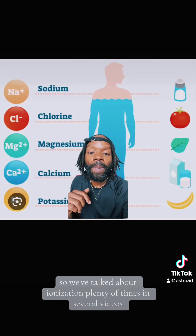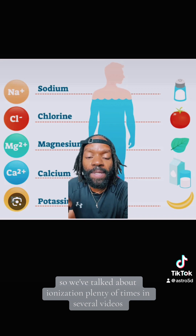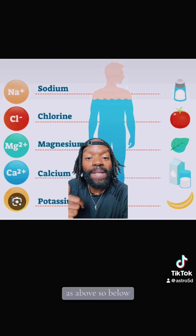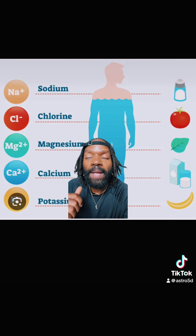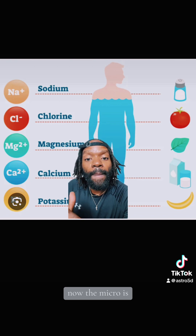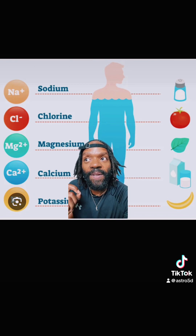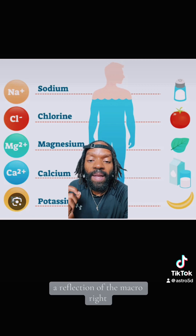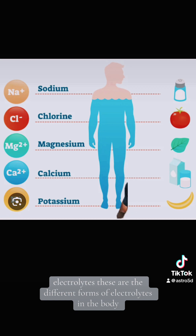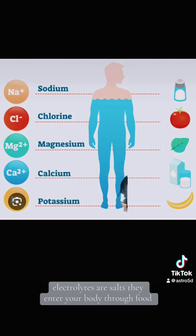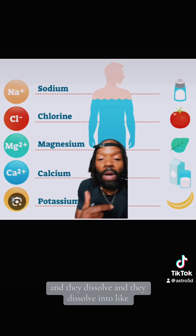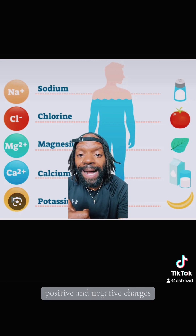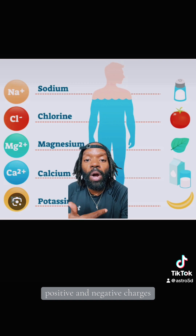We've talked about ionization plenty of times in several videos. As above, so below — the micro is a reflection of the macro. Electrolytes. These are the different forms of electrolytes in the body. Electrolytes are salts. They enter your body through food and they dissolve into positive and negative charges.